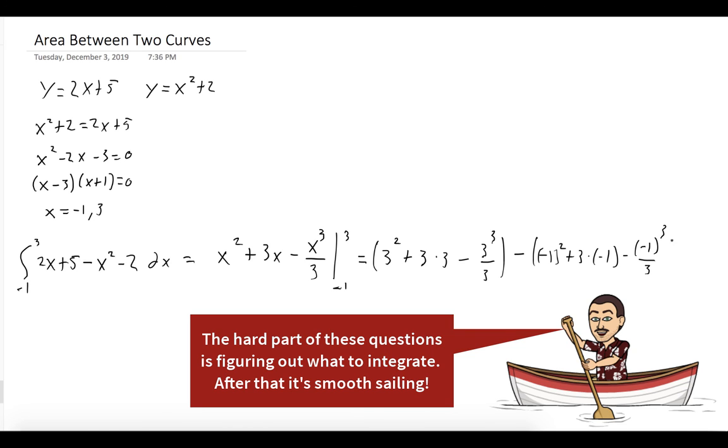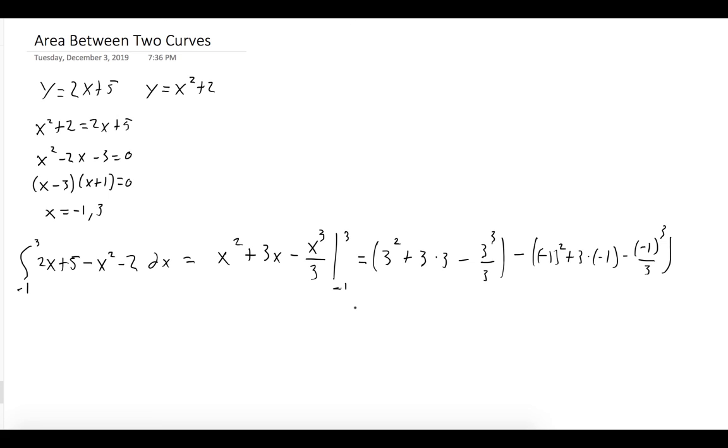And we could do this calculation and we get 9 plus 1 and 2 thirds, which is 10 and 2 thirds.